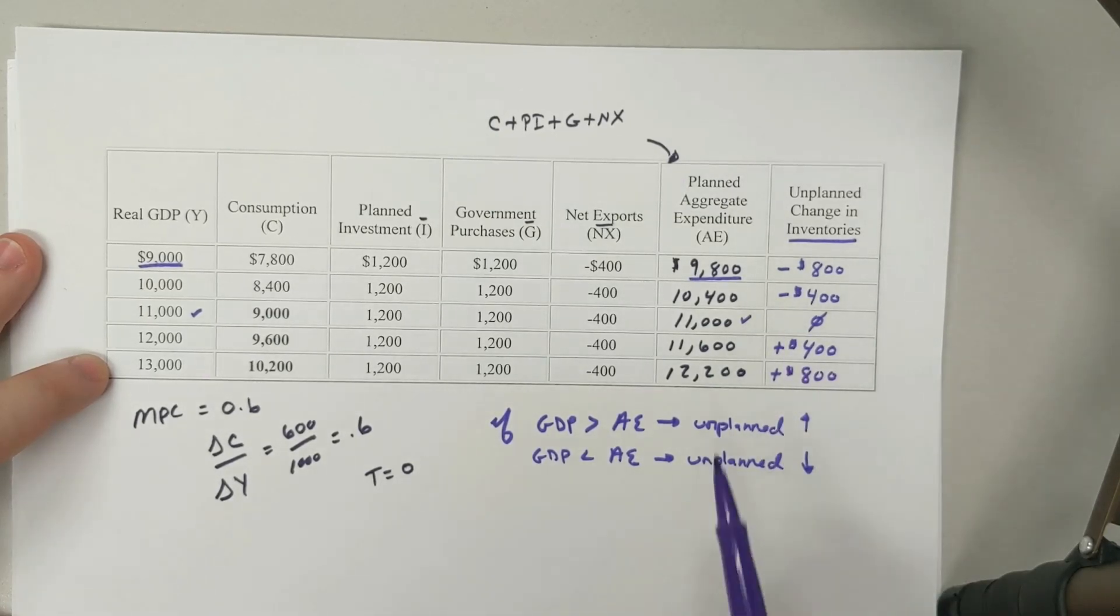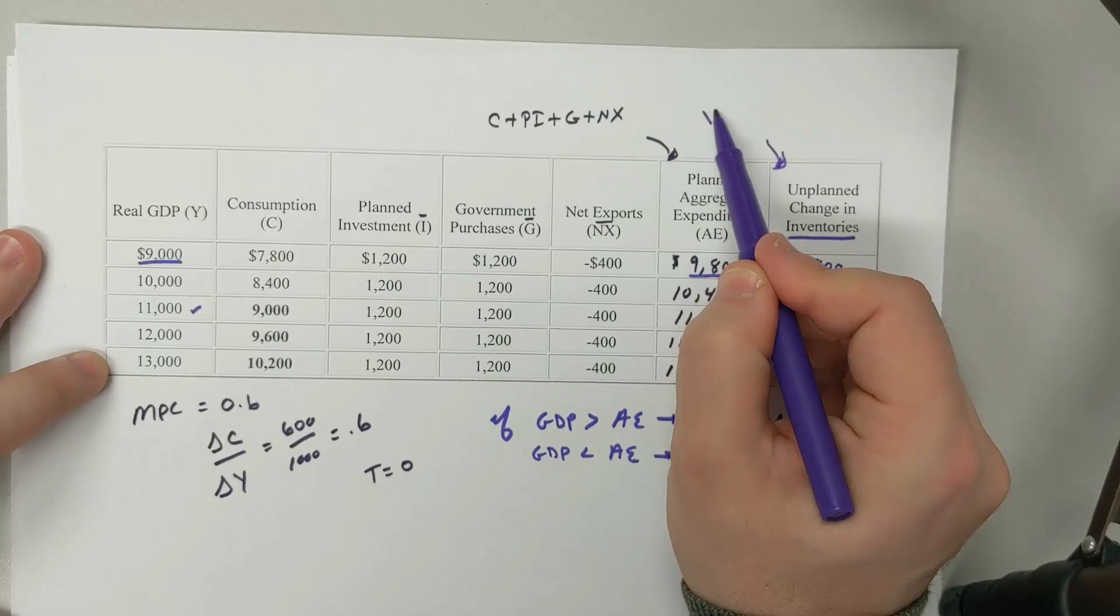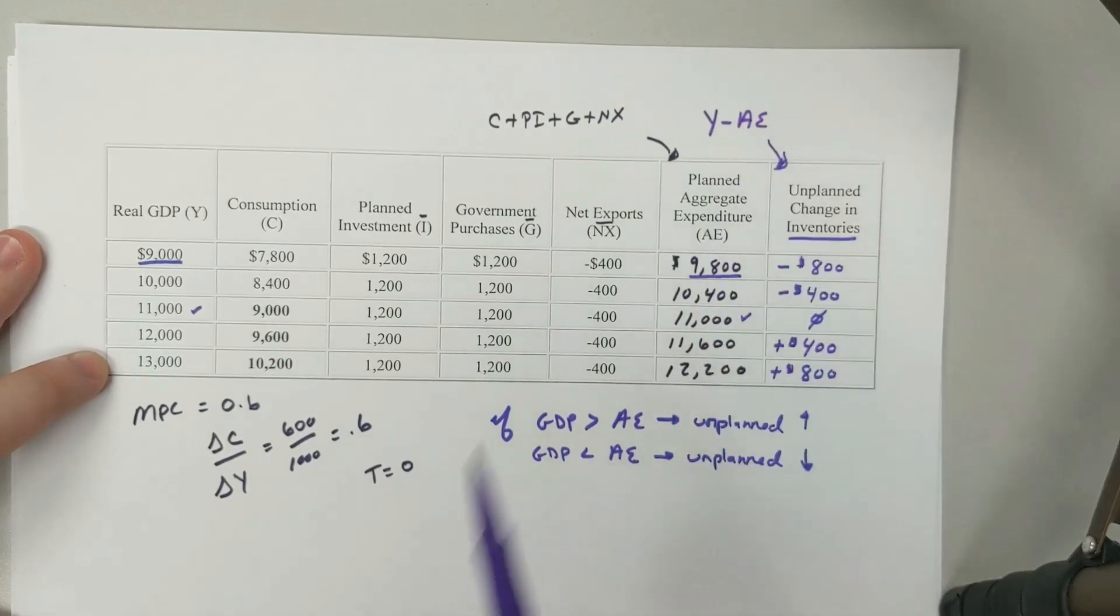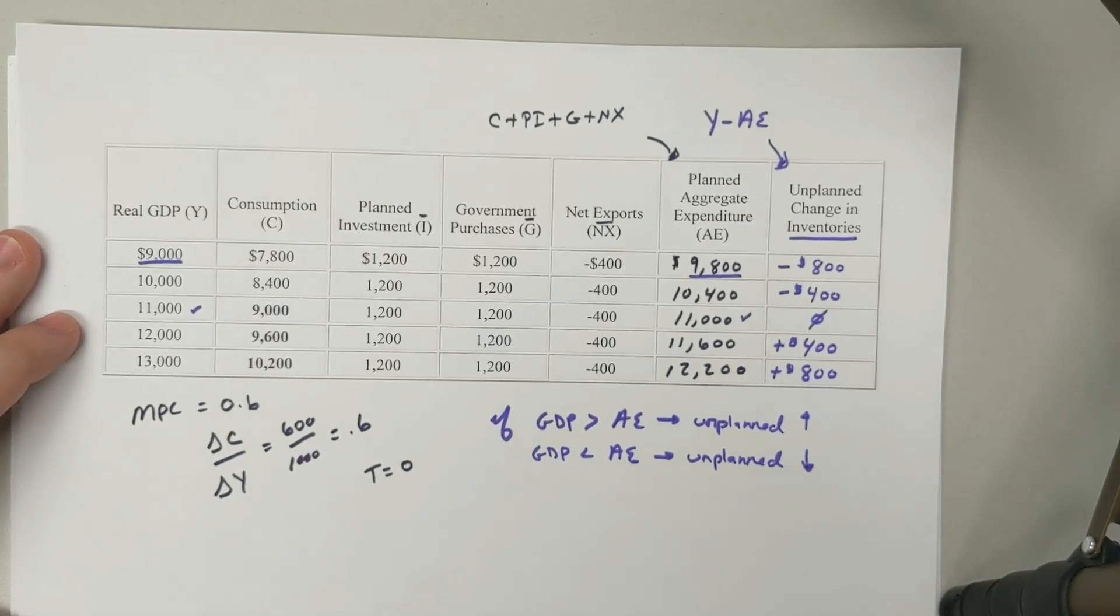Here we can come up with an equation. Unplanned changes are just going to be my GDP minus my aggregate expenditure, if you want an equation to help you out there. But make sure you're really understanding why that's the case.